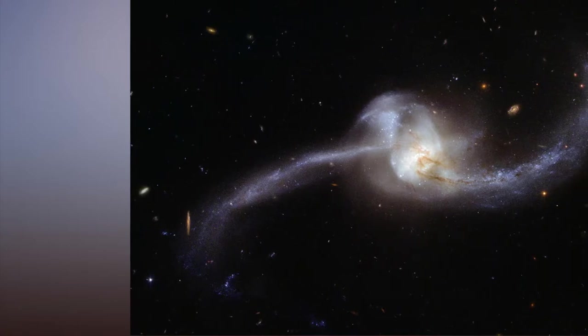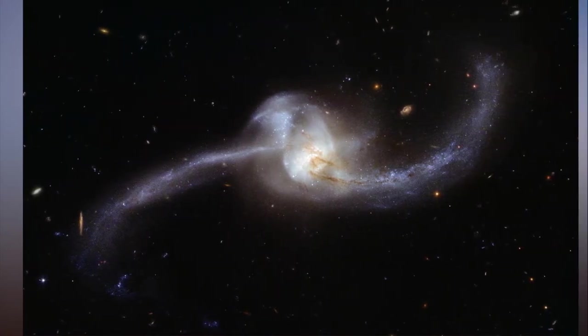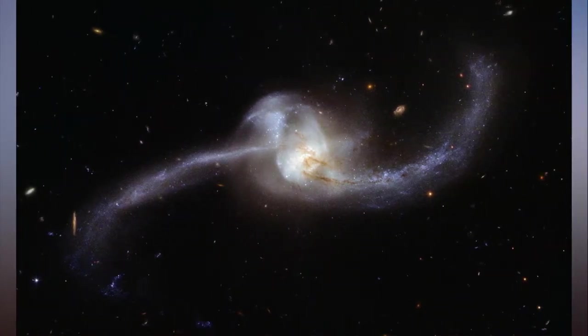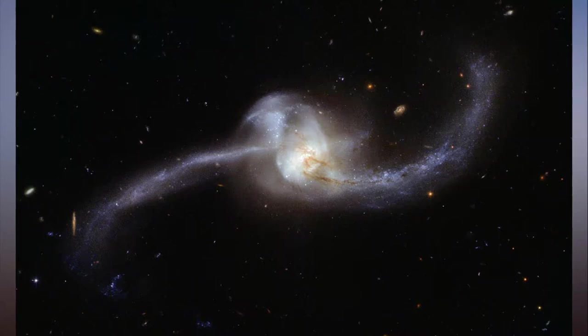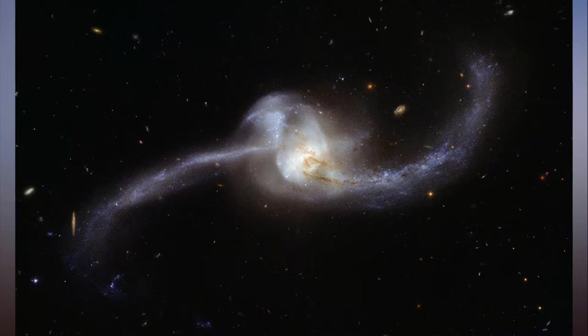NASA captures rare image of a distant galaxy nearly as old as the universe itself. When astronomers at NASA capture images of far-off galaxies, they typically appear only as tiny red dots. These distant celestial bodies are so far away that even the strongest telescopes are usually incapable of distinguishing between the many stars contained within a galaxy.